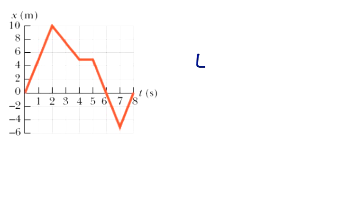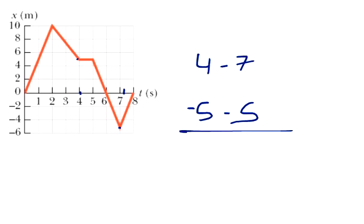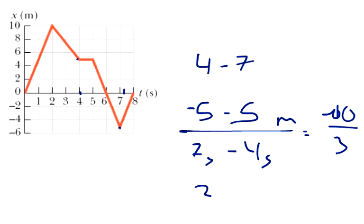The next question says from four to seven seconds. So from right here at five to right here at negative five. So x-final is negative five, subtracting x-initial which is five, divided by our time final seven seconds minus four seconds. We end up with negative ten over three, which is approximately negative 3.33 — that will repeat forever. So that's the answer: negative 3.33 meters per second.